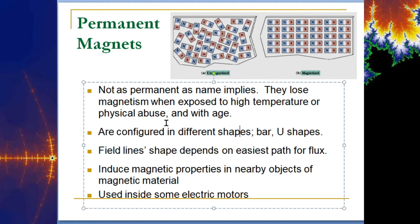Permanent magnets are not as permanent as the name implies. They lose magnetism when exposed to high temperature, physical abuse, or just with age. If you've got a magnet you bought 10 or 15 years ago, it's probably not as strong as it was. Newer magnets are obviously much stronger.